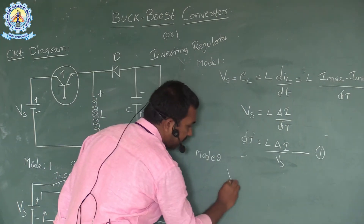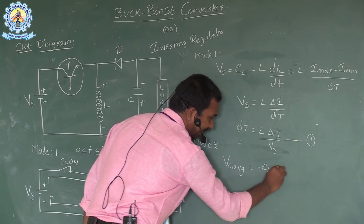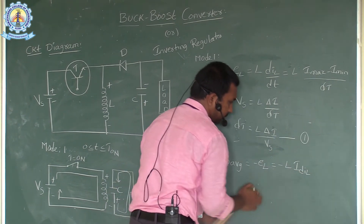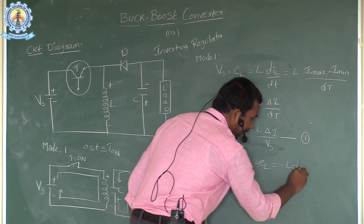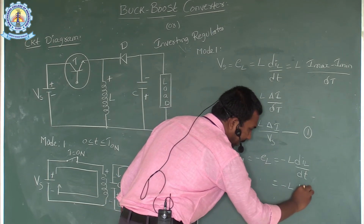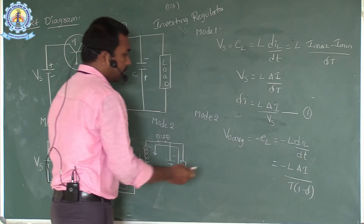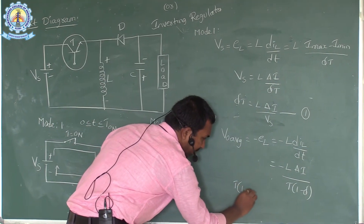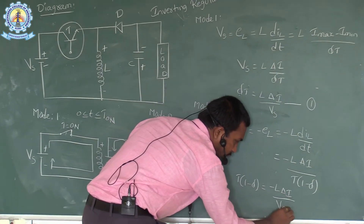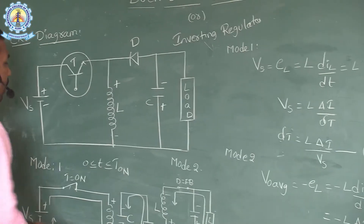That's why we represent V_out (average) equal to minus VL, which equals minus L × (di_L / dt). This gives us L × ΔI / (T × (1 − δ)). Therefore, T × (1 − δ) = minus L × ΔI / V_out(average). This is equation number two.